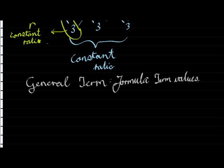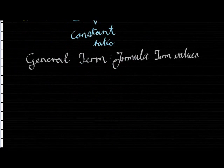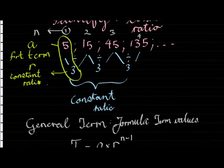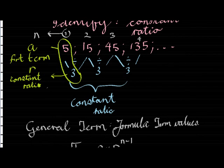The general term is a formula for term values. So if I know I want the hundredth term, then I will use the general term and that hundred to work it out. The general term for a geometric sequence is your first term multiplied by r for n minus 1 times.